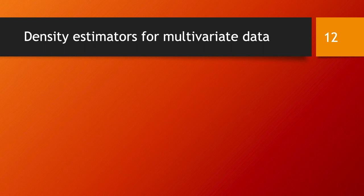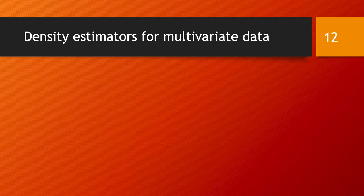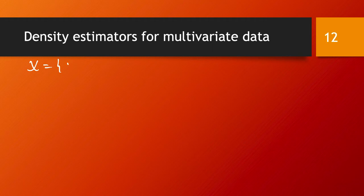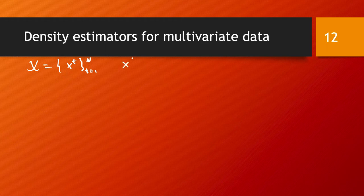In the case we have multivariate data, we are dealing with a data set X, just like before, consisting of data points xt with t from 1 to n, except that this time these data points xt are d-dimensional, so they are in R to power d.